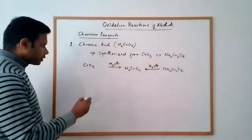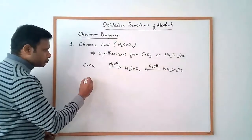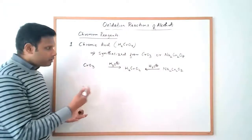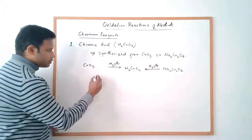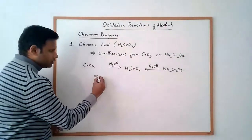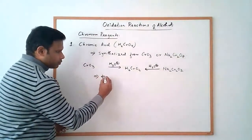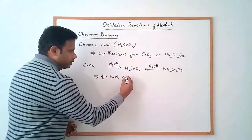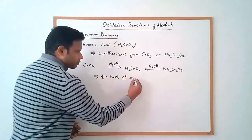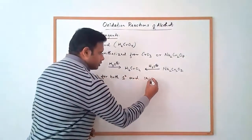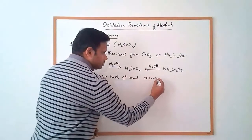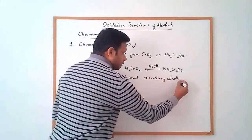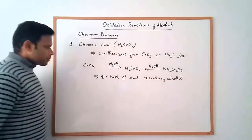Chromic acid is suitable for oxidizing both primary and secondary alcohols.